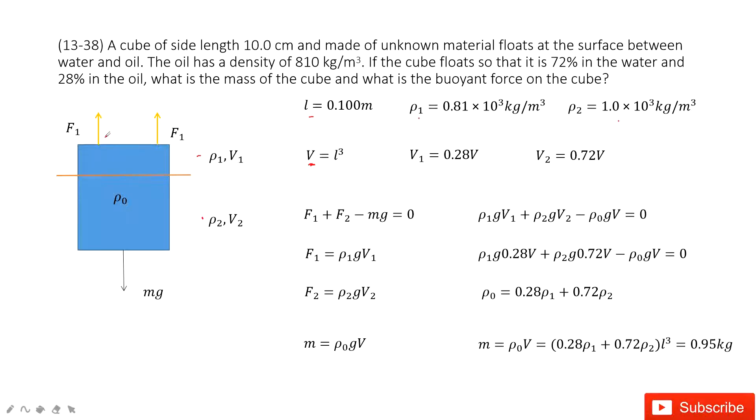So the buoyancy F₁ plus buoyancy F₂ minus the gravity equals zero. F₁ comes from the oil and F₂ comes from the water.